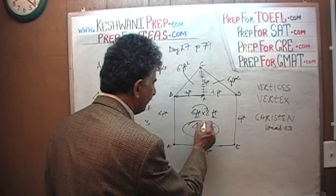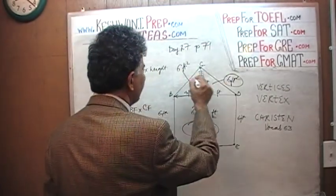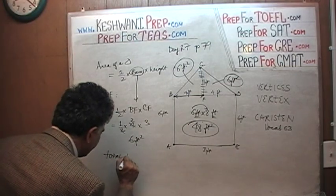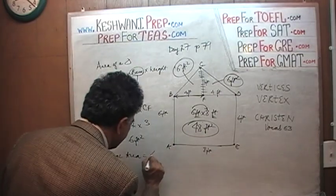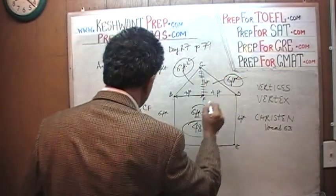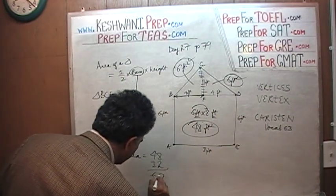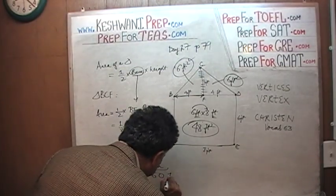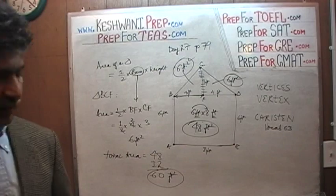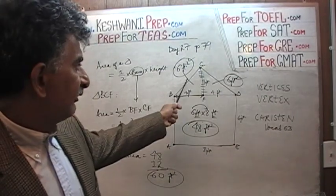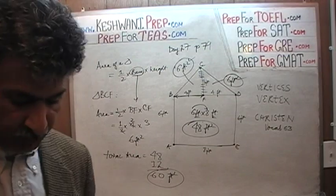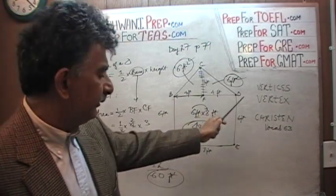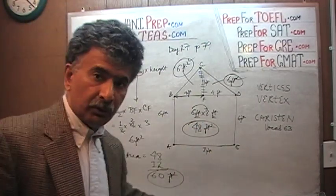So the total area is 48 square feet for the rectangle, 6 square feet for this triangle, and 6 square feet for that triangle. Therefore, the total area is going to be 48 plus 6 plus 6, which is 60 square feet. Total area: 60 square feet — 48 square feet for the rectangle and 6 square feet for each of the two small triangles on top, triangle BCF and the identical triangle CFD. I'll see you tomorrow — bye now.